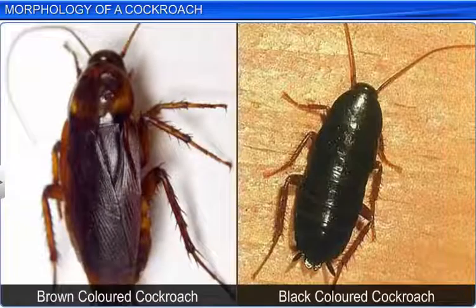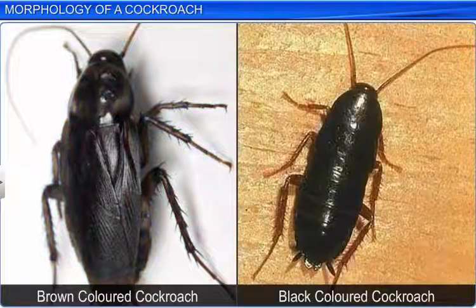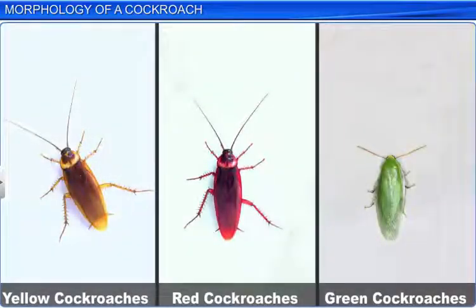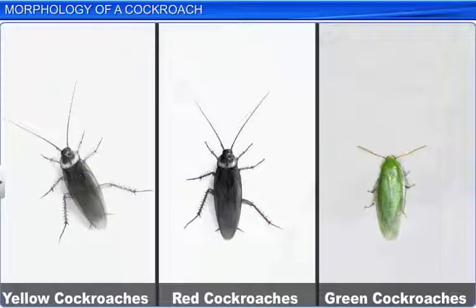Cockroaches are usually brown or black. However, in the tropics, you may also find bright yellow, red, and green cockroaches.